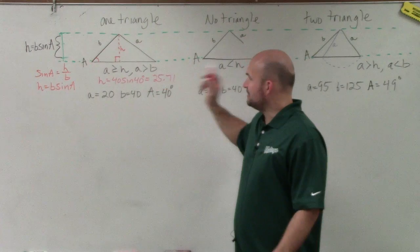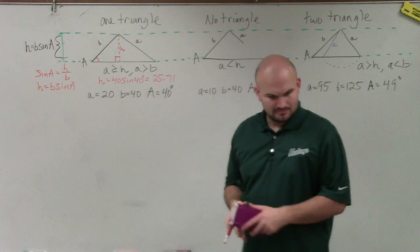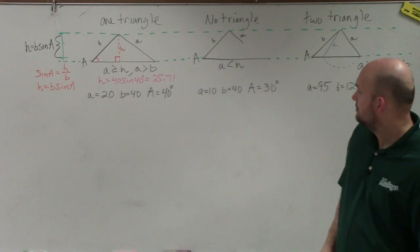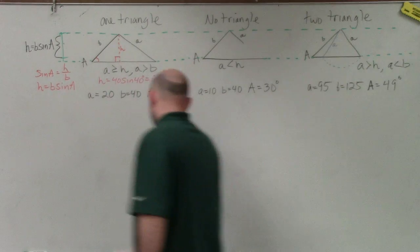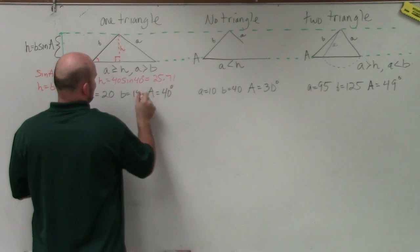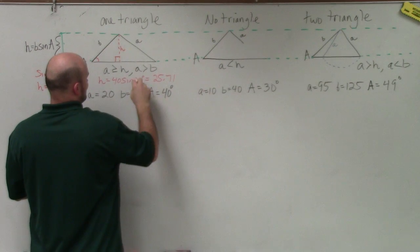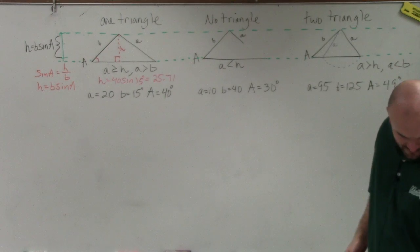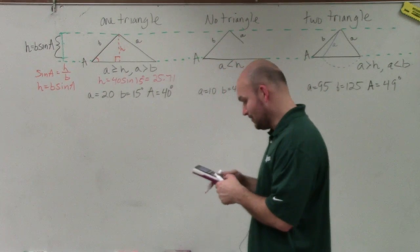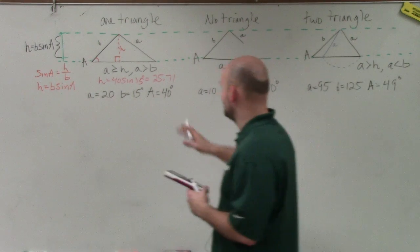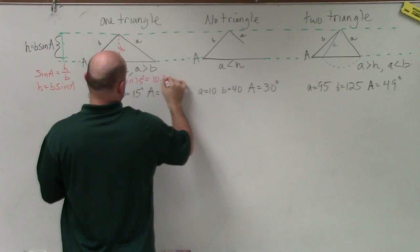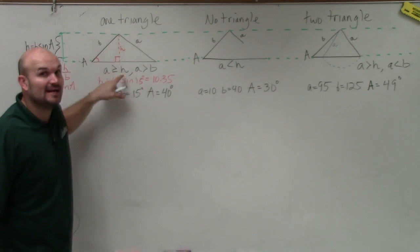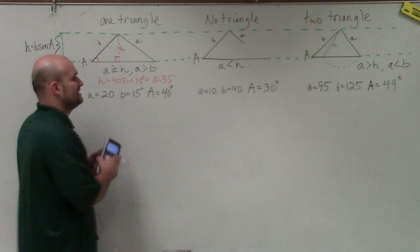Oh, I wrote that wrong. That's supposed to be 15. I'm an idiot. I took this from another problem. So let's write that again. I have 20 times the sine of 15. And that's 10.35. So you can see that my value of H is less than A. So as long as it's less than or equal to A, it's only going to create one triangle. So therefore, I can verify that this creates one triangle.